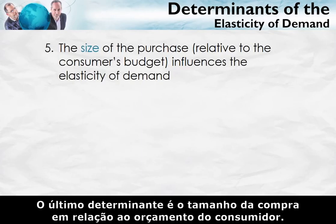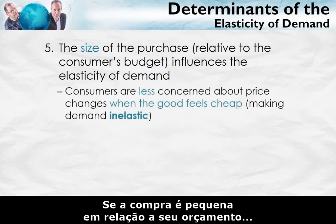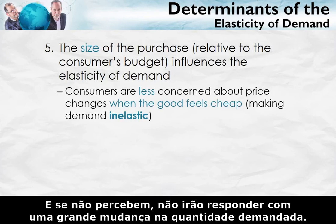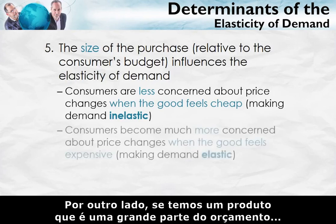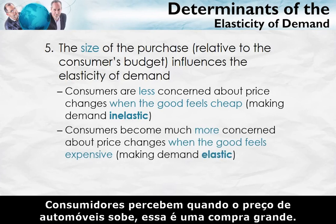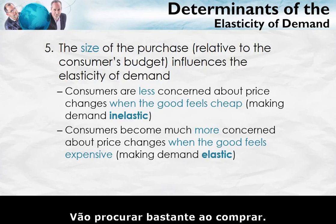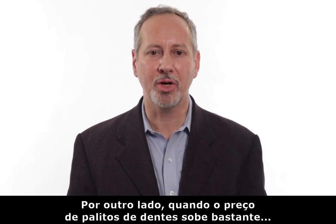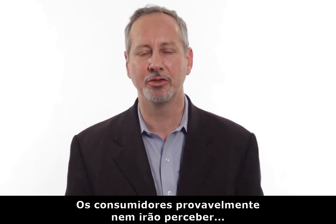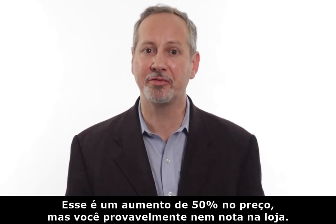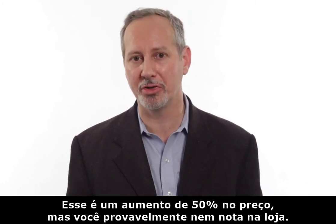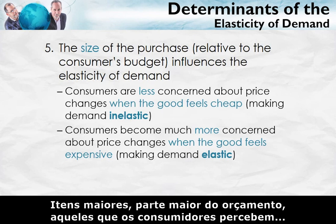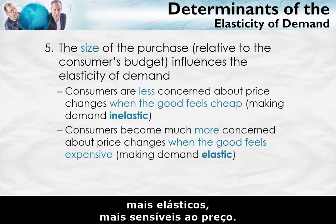The final determinant is the size of the purchase relative to the consumer's budget. If the purchase is small relative to the budget, consumers may not even notice when the price goes up, so they won't respond with a big change in quantity demanded. On the other hand, a product that is a large part of the budget — like automobiles — consumers will notice, shop around, and try to get a good deal. When the price of toothpicks goes up by a lot — say from 50 cents to a dollar — that's a 50% increase, but you probably don't even notice at the store. Small items are more inelastic; bigger budget items are more elastic and more price sensitive.